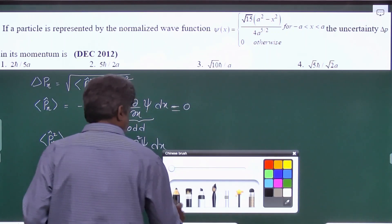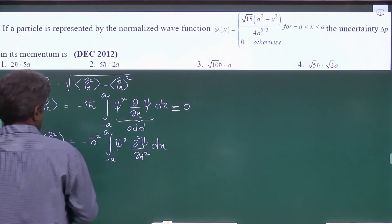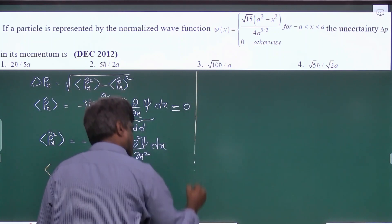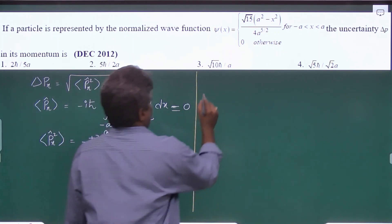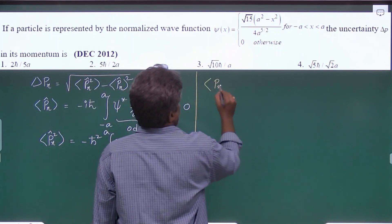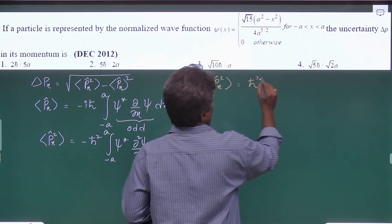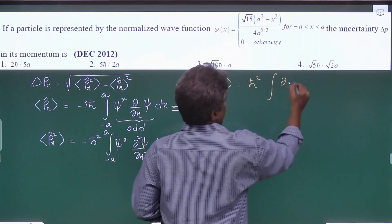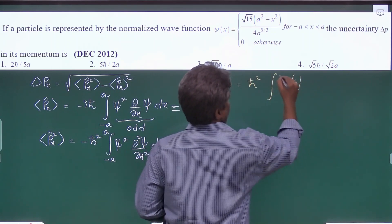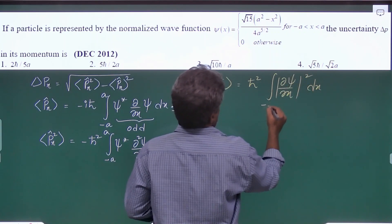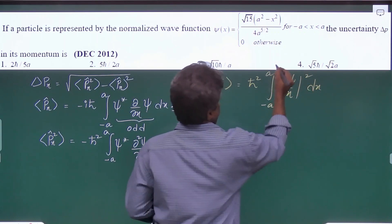And in the class we have discussed some alternate formula. That is average value of px square, here you won't get minus, that is h cross square integral d psi by dx mod square dx from the given limits of minus a/2 to plus a/2.